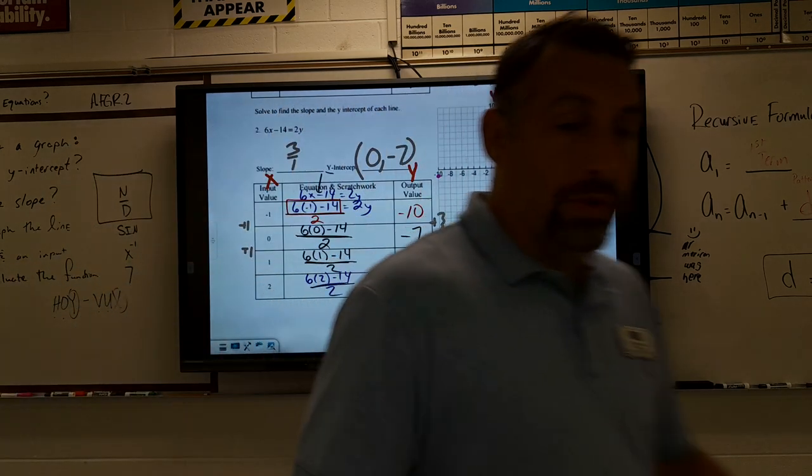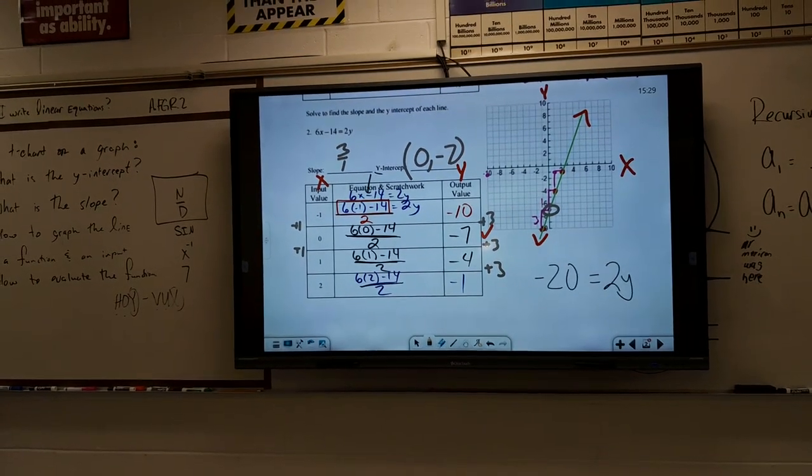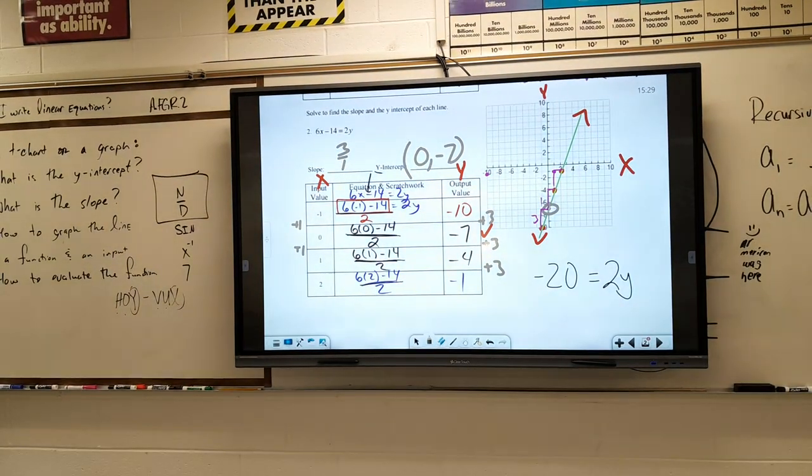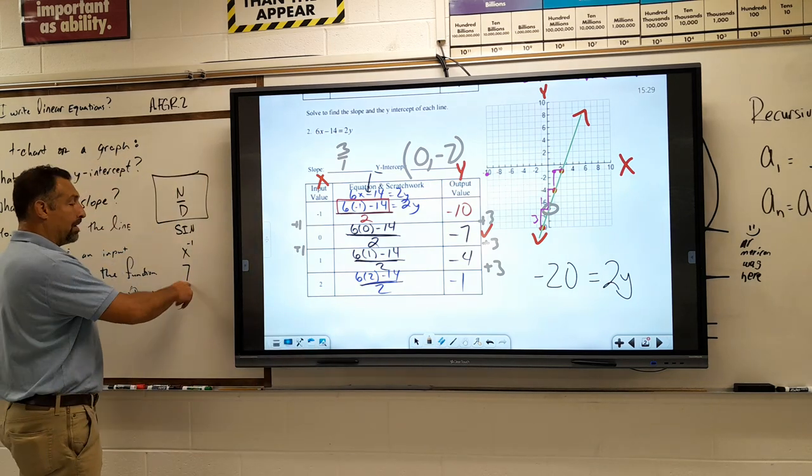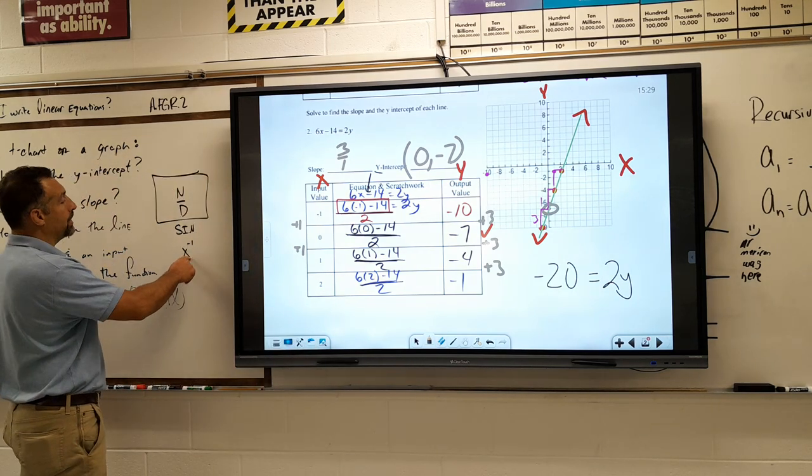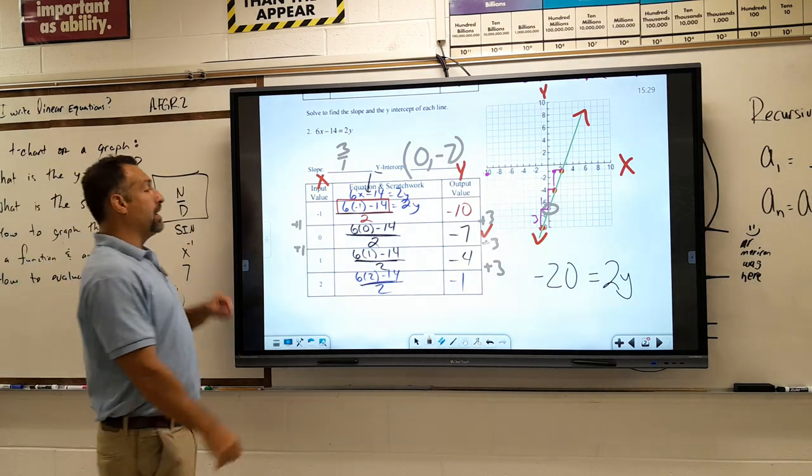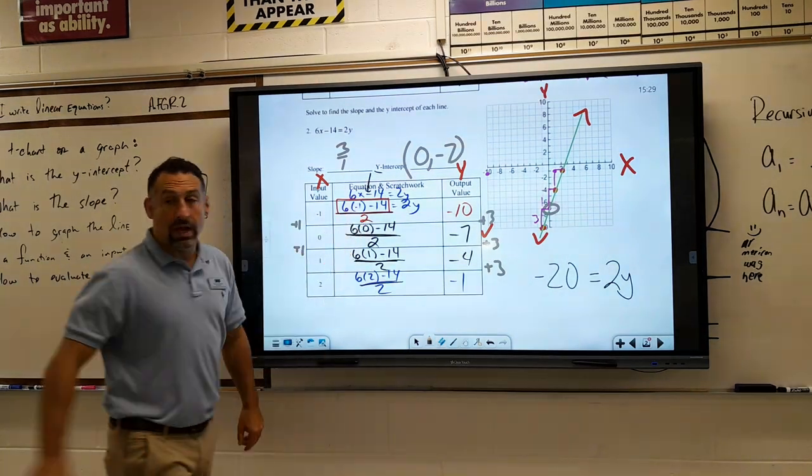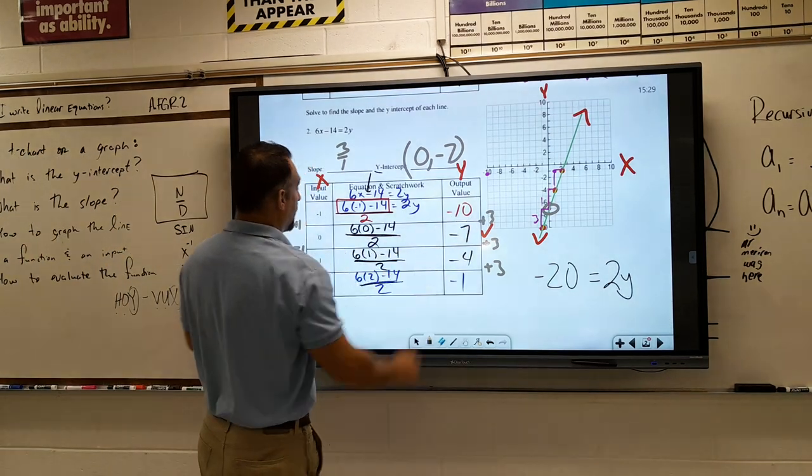On their calculator, above the 7th key, above the x^-1 or x inverse key, and above the sine symbol is this N over D button. They hit that button, then they can type this in on their calculator, and it'll automatically simplify it and get these results.